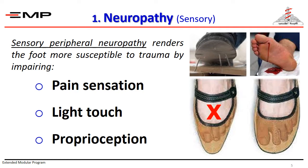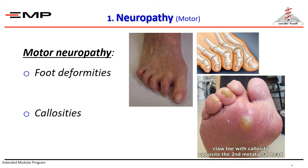Sensory peripheral neuropathy renders the foot more susceptible to trauma by impairing pain sensation, light touch, and proprioception. Hence, the patient is less aware of potential injury from ill-fitting footwear and foreign bodies in the shoes. Ulceration and infection in diabetic feet are usually painless and often neglected by the patient.